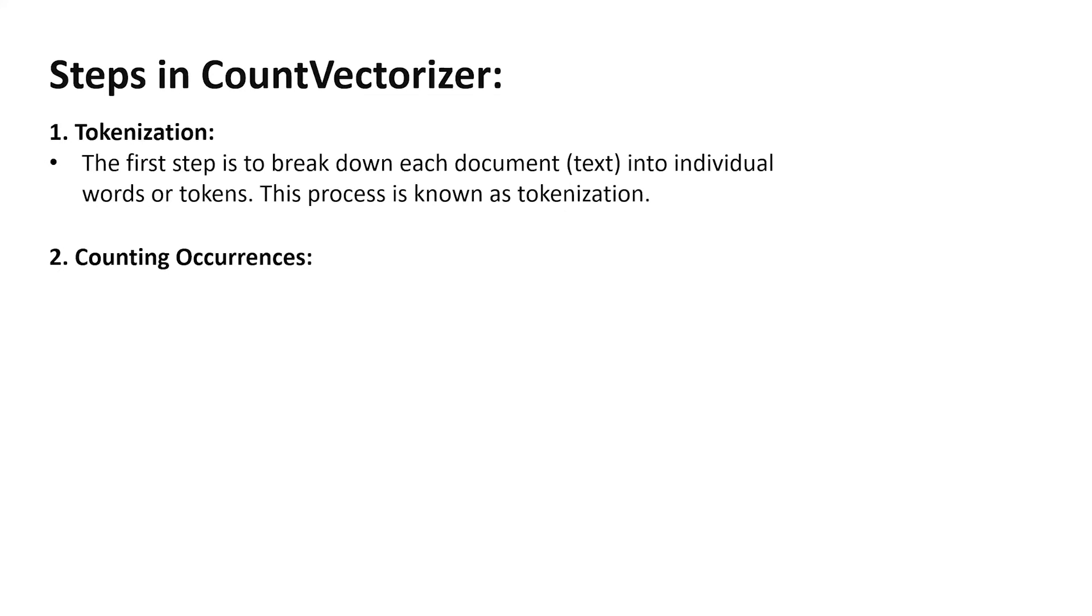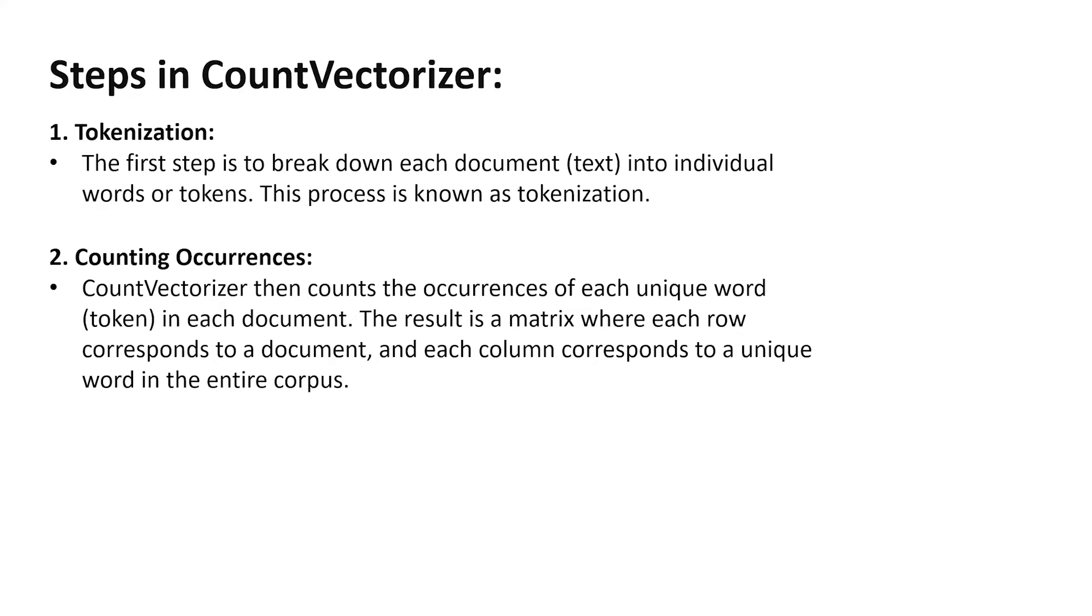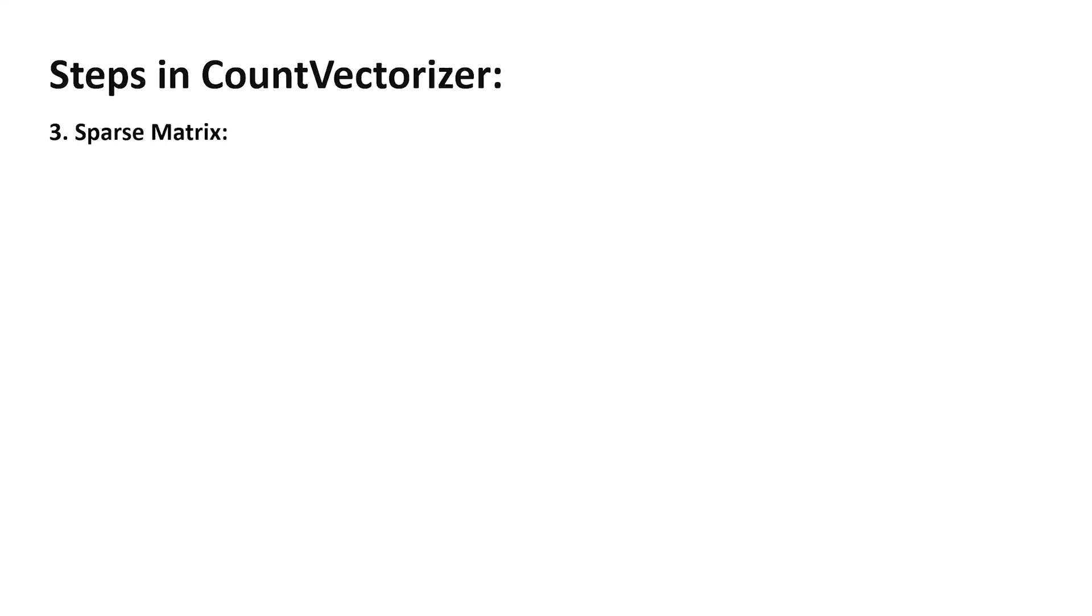Then we move about counting the occurrences. So count vectorizer has inbuilt capabilities. Of course, there's a code behind it which counts the occurrences of each unique word in the document and it results in a matrix where each row corresponds to a document and each column corresponds to a unique word in the entire corpus, entire collection of text.